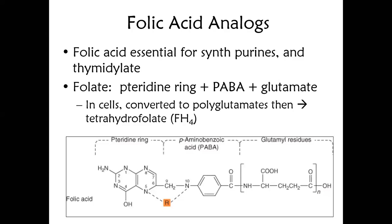There is a detailed mechanism of folate absorption that you can review if you have time. From the point of absorption, the story starts. Folate is basically a pteridine ring plus PABA — paraminobenzoic acid — plus glutamate. These three things constitute folate. Inside cells, folate gets converted into polyglutamates because folate cannot be absorbed directly; it has to be in polyglutamate form to be absorbed.